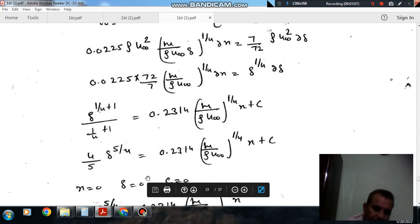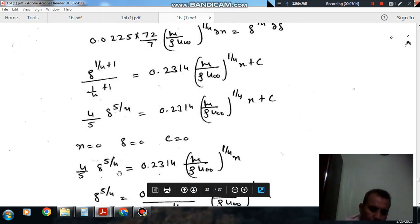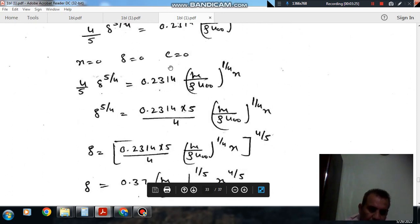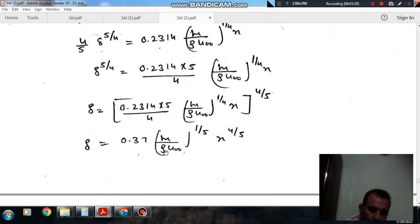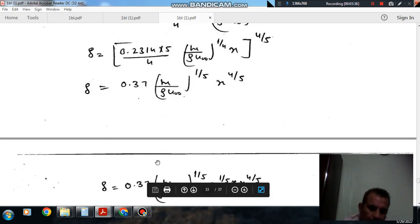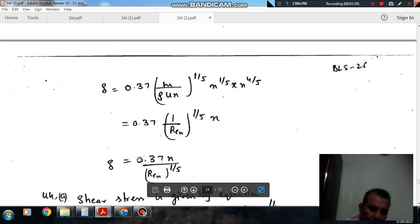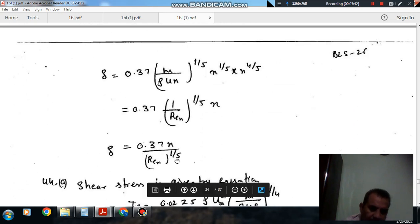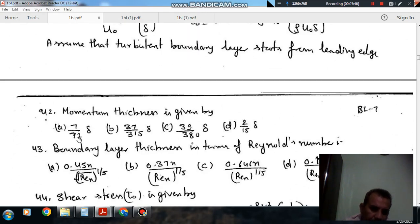If x is 0, delta is 0, so c equals 0. Taking c as 0, delta will be 0.37 (nu/rho u_infinity)^(1/5) times x. Or in terms of Reynolds number, it will be 0.37 x Re_x^(-1/5). Now next is shear stress.